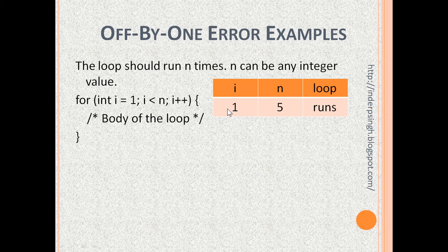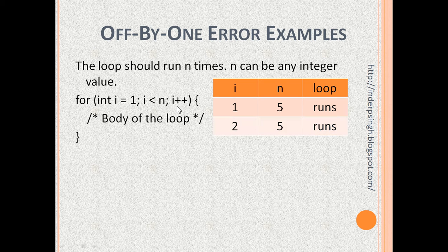The initial value of i is 1, given by int i equals 1. n is 5. 1 is less than 5, which is the condition given here, and the loop runs. i++ makes the value of i equal to 2, incrementing it by 1. 2 is less than 5, and the loop runs.